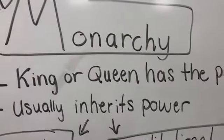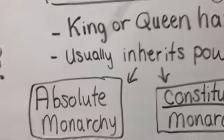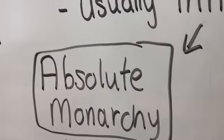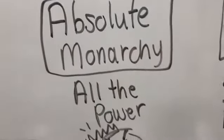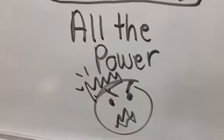Usually the king or queen inherits power. Inherit means — let's say a king has passed away and now they need to figure out who the new king is — usually they're going to pass the power down to the son. So inherit just means it's passed down through family ties. There are two types of monarchies. The first is an absolute monarchy — back in medieval times, most kings had all of the power. They were absolute. They could chop off people's heads. They could do whatever they wanted.